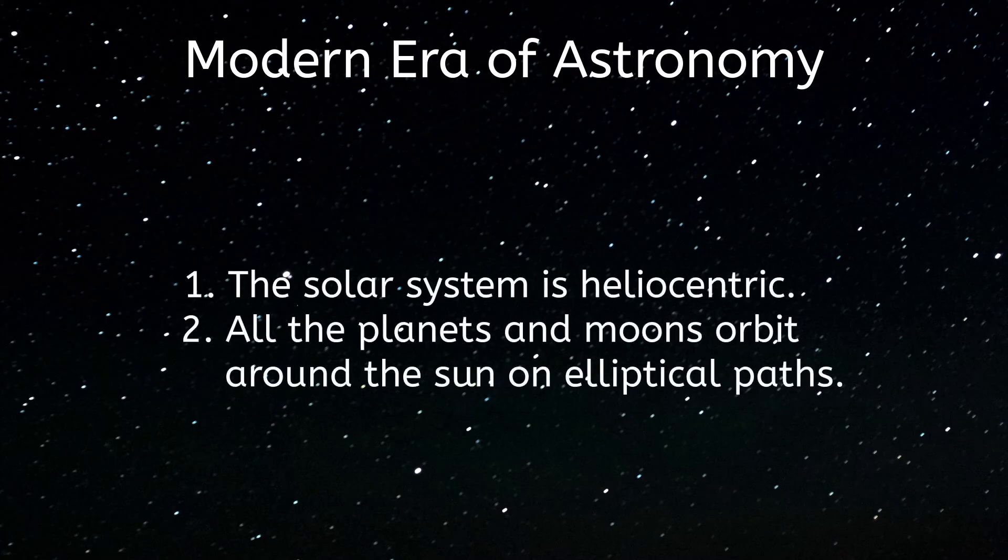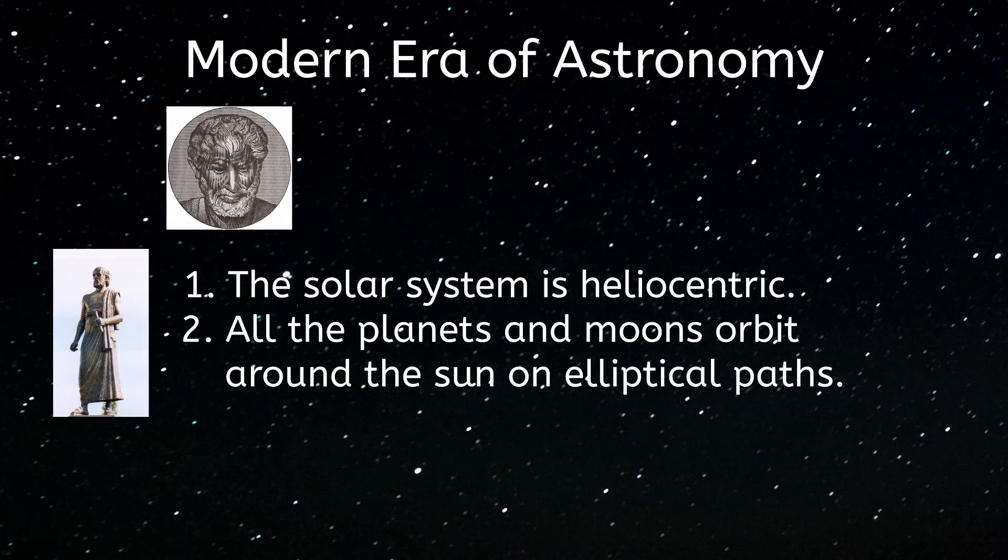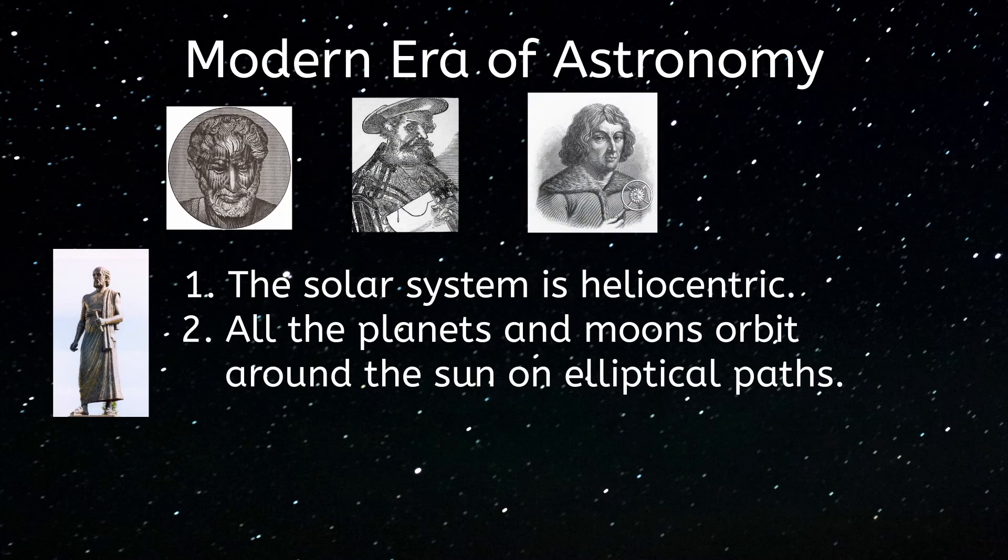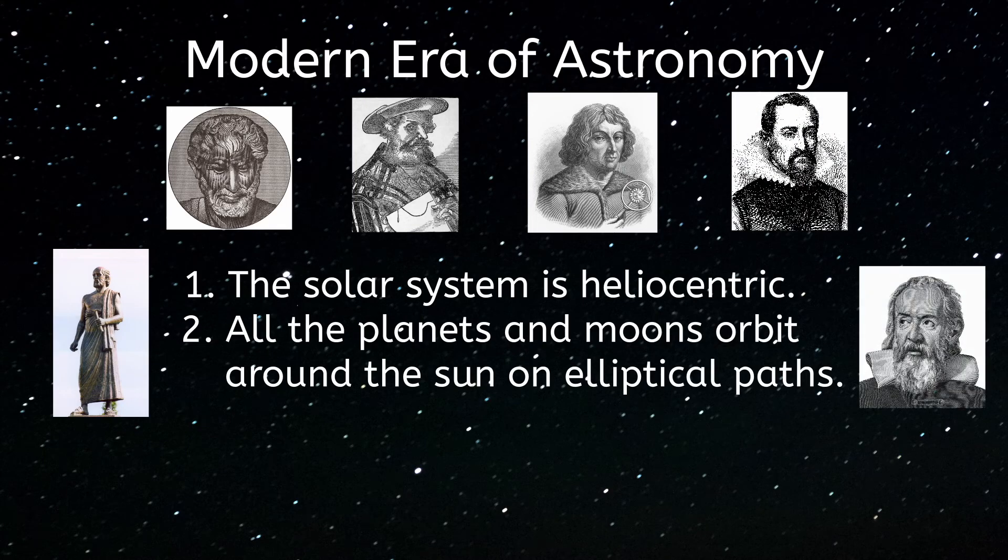Now we understand that the solar system is heliocentric, with all the planets and moons within it orbiting around the Sun on elliptical paths. And although we've learned a lot since the days of Aristotle and Aristarchus over 2,000 years ago, we'd never have gotten here without the ability to build on those earliest scientific discoveries and theories.